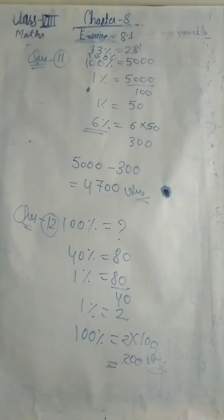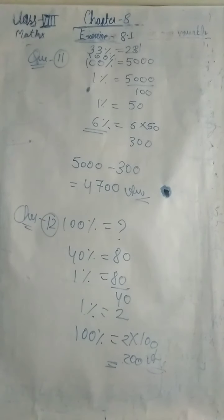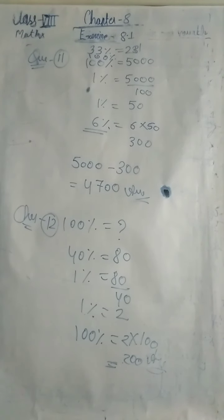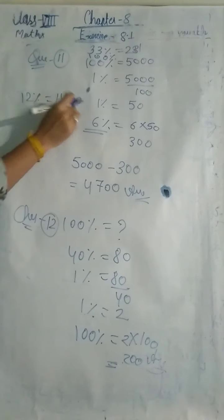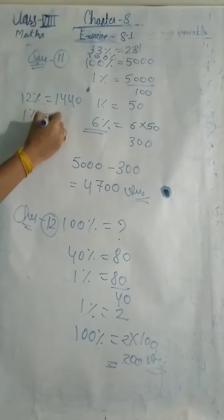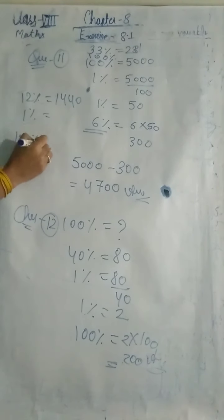Question number 14: Raj deposits 12% of his pocket money in his piggy bank. If he deposited Rs. 1440 in the piggy bank, then what was his total pocket money? 12% equals 1440, so find 1% from that, then find 100% to get the total pocket money.